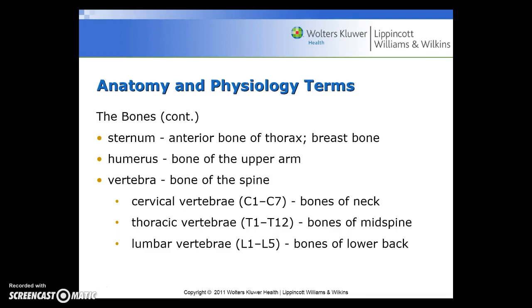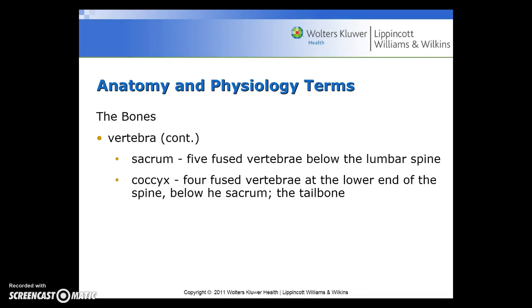The humerus is the bone of the upper arm. The vertebrae are the bones of the spine. There are the cervical vertebrae, C1 through C7, the bones of the neck; the thoracic vertebrae, T1 through T12, bones of the midspine; and the lumbar vertebrae, L1 through L5, bones of the lower back. The vertebrae also includes the sacrum, which are five fused vertebrae below the lumbar spine, and the coccyx, which are four fused vertebrae at the lower end of the spine below the sacrum, often called the tailbone.